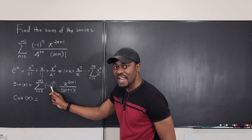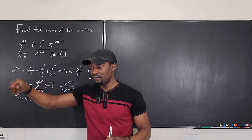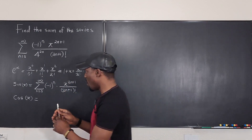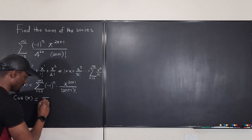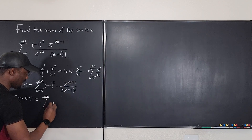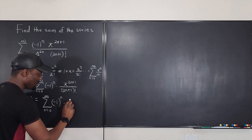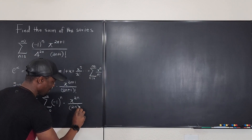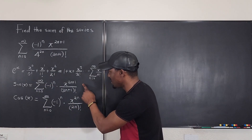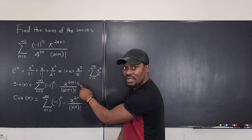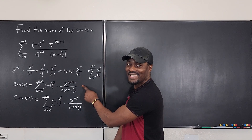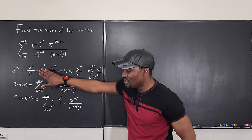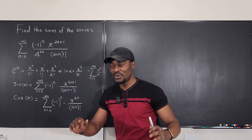It's important to remember there's always a negative one to the n for trig functions, because sine and cosine fluctuate between positive and negative. For cosine of x, the series is the sum from n equals zero to infinity of negative one to the n, multiplied by x to the 2n over (2n) factorial — the difference is just the exponent and factorial: 2n instead of 2n+1. Remember: integrating cosine gives sine, and differentiating gives the corresponding shift.